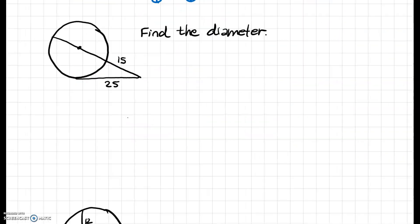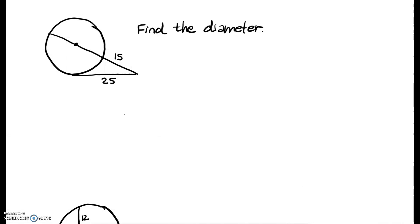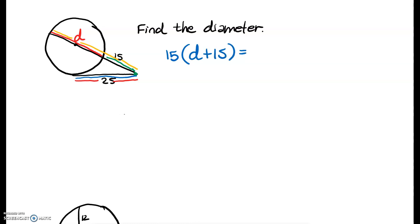Let's move on to the next couple of problems. In the next couple of problems, we're going to be finding the diameter. The diameter goes through the center of the circle — I'm going to call the diameter D. We have two lines that intersect outside of the circle, so it's going to be the outside part times the whole length equals the outside part times the whole part. So we have 15, the outside part, times the entire length, which is D plus 15.